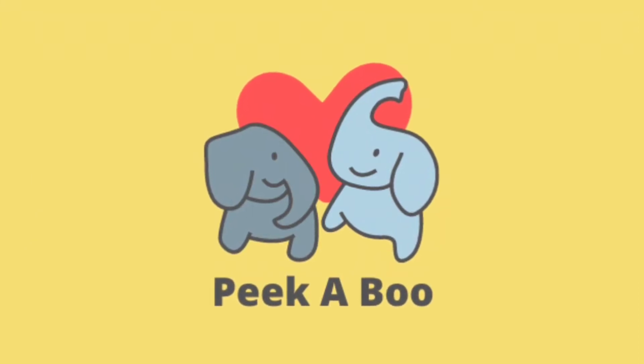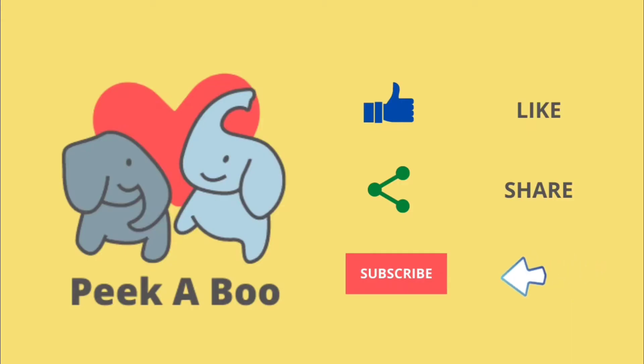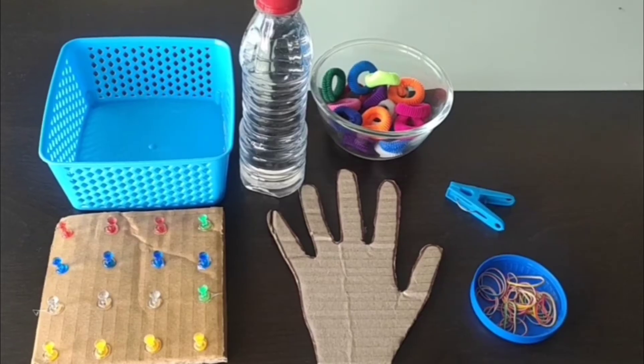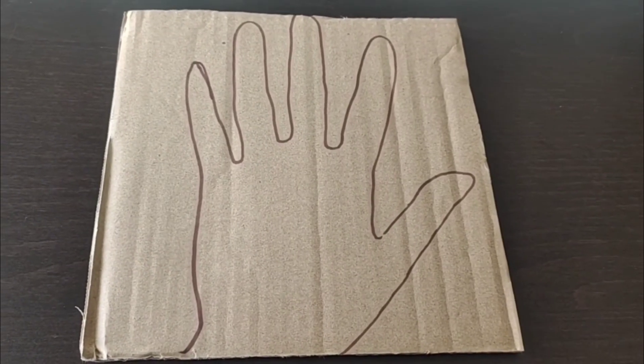Hello and welcome to Peekaboo! Discover playway methods to teach your kids, and don't forget to like, share, and subscribe to our channel. Today we're going to show you four games with elastic bands. For the first one, trace your palm on a cardboard and cut it out.